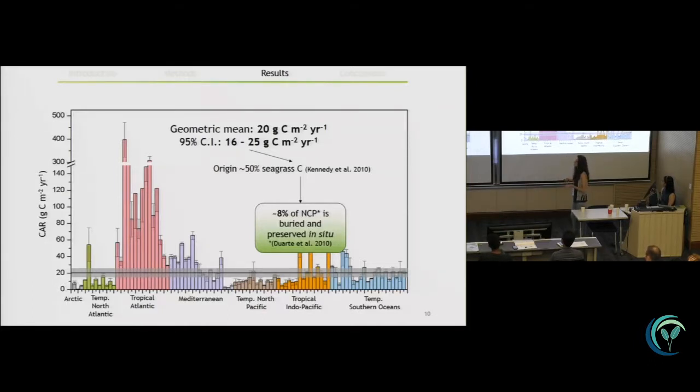So assuming that 50% of this carbon that we find in sediments come directly from plant tissues and based on published estimates of net community production, we will see that about 10% of the net community production of seagrass meadows is preserved and buried in situ on a centennial timescale.